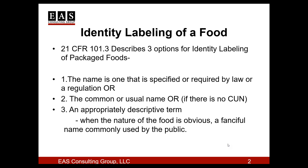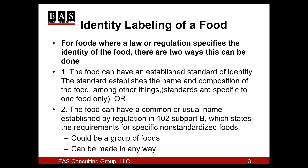Going back to the first bullet point, where regulation or law specifies what the identity is of a food, there are two types of regulations that can put this in place. The first way is for a food identity to be regulated as a standard of identity under 21 CFR Part 130. The standards of identity have specific recipe requirements and also specify the name of any product purporting to meet that standard.